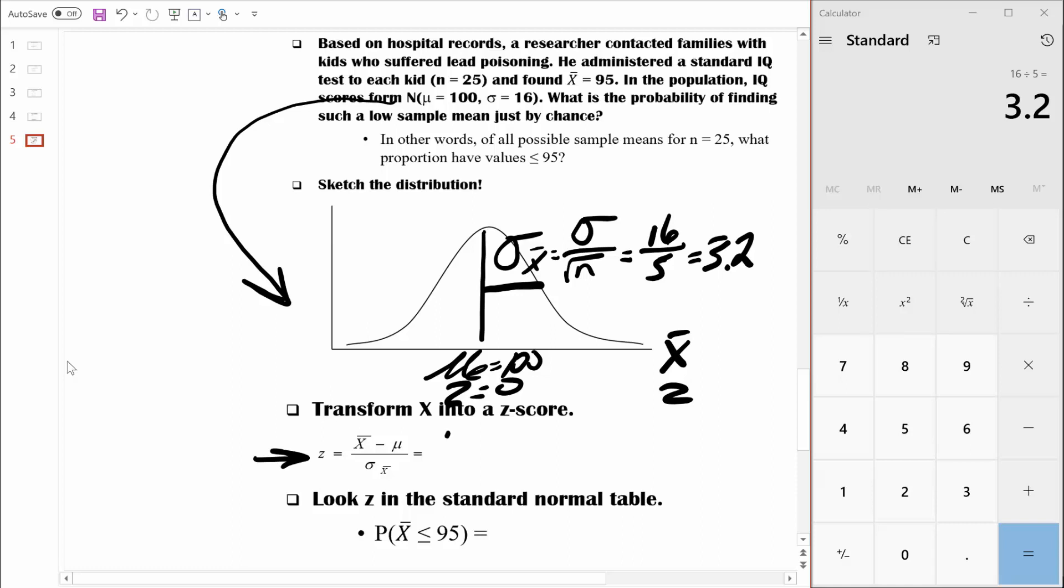So we're going to take that sample mean of 95, plug it in, subtract the population mean, which is 100, and then divide by the standard error of the mean, which is 3.2. We're left with negative 5 divided by 3.2. So let's key in 5, I'm going to make it negative, and divide that by 3.2. That equals a Z score of negative 1.56.